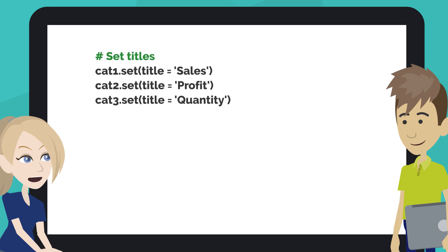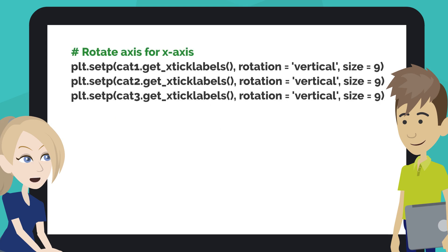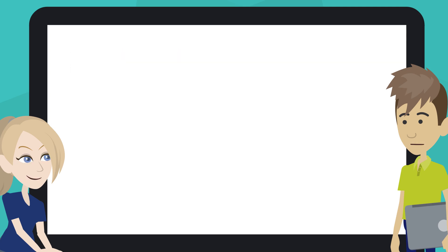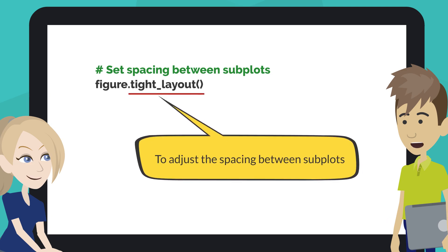This code sets titles. This code rotates the axis for the x-axis. The TightLayout function adjusts the spacing between subplots.